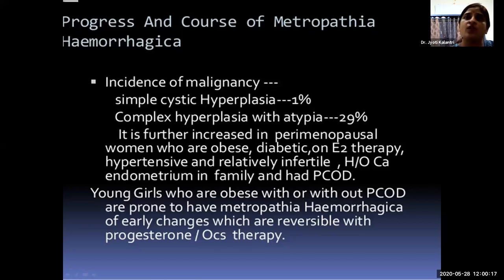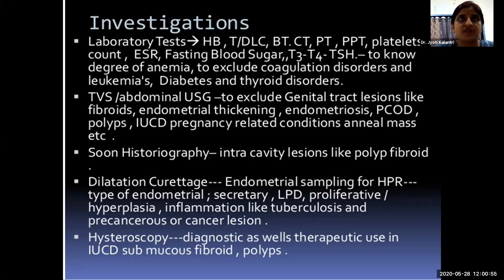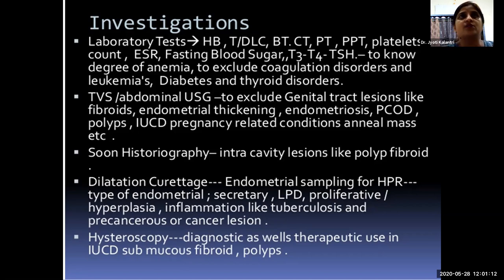Metropathia hemorrhagica and AUB are diagnoses of exclusion — other pathologies must be ruled out first. Investigations require thorough medical, surgical, family, and past history, including history of AUB in family members. Treatment also depends on the patient's age (pubertal, adolescent, or perimenopausal), and whether a reproductive-age woman wishes to retain fertility. The amount of bleeding is important for further diagnosis and treatment planning.